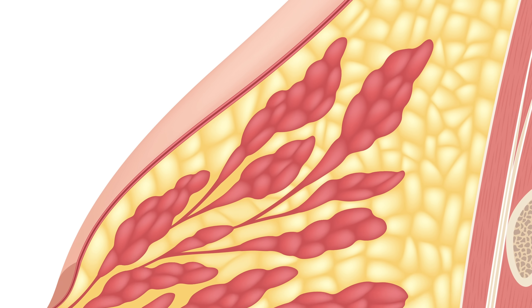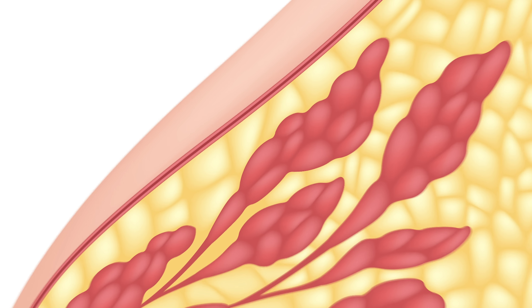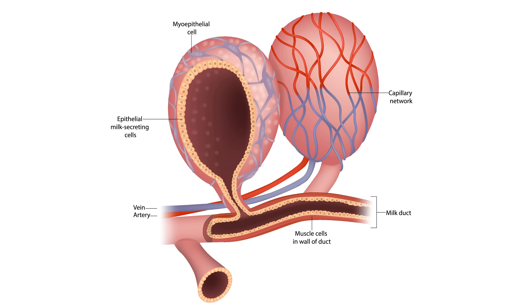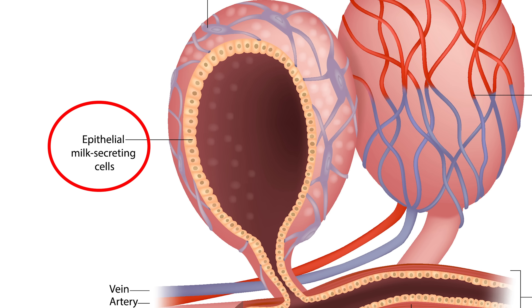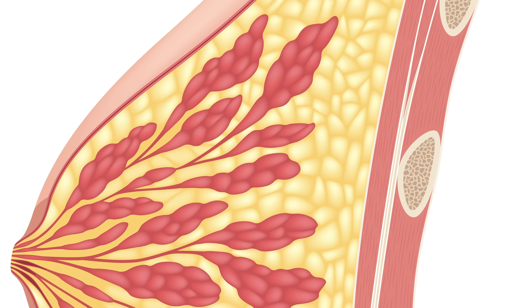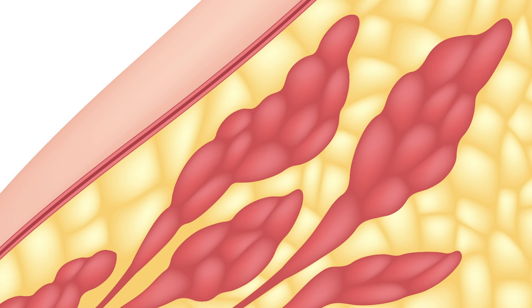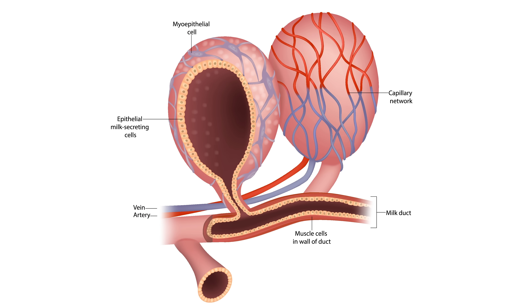Each lobe within a mammary gland is made up of even more compartments called lobules. And if we were to zoom into one of these lobules, we would see that they are made up of grape-like structures called alveoli, which are lined with milk-secreting epithelial cells. So: each breast has a mammary gland, each mammary gland is broken up into 15 to 20 lobes, each lobe is made up of multiple lobules, and each lobule is made up of multiple alveoli — which contain the milk-secreting cells.